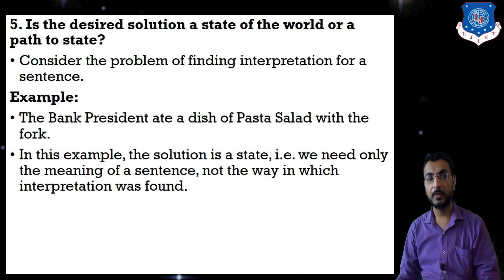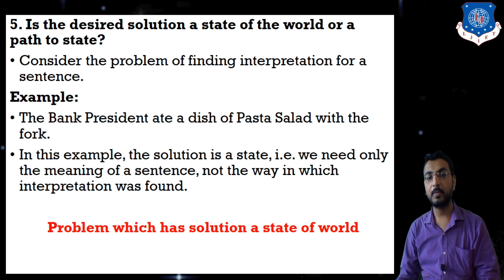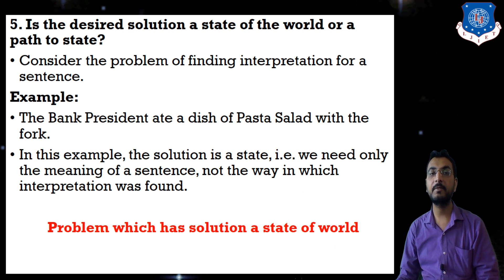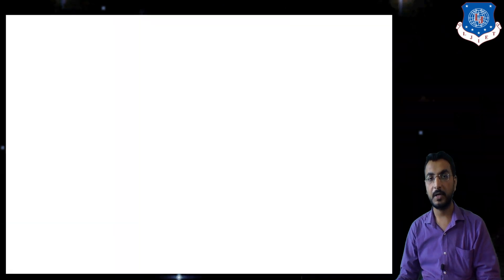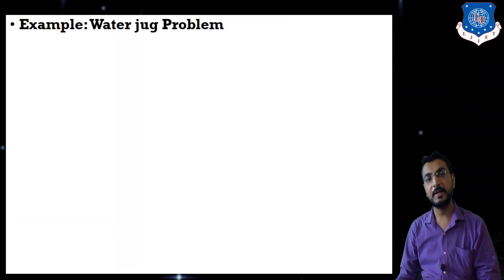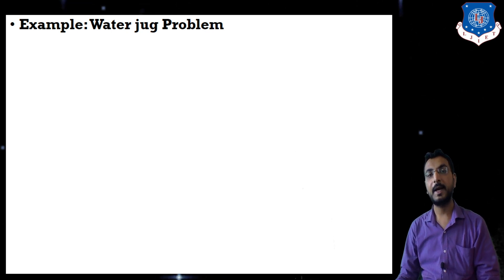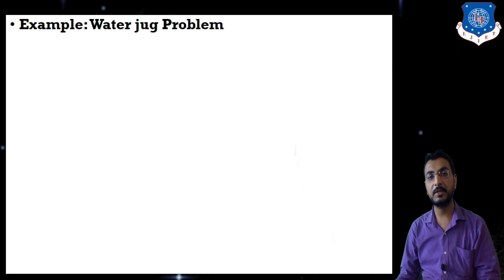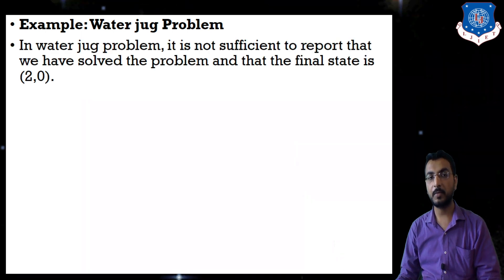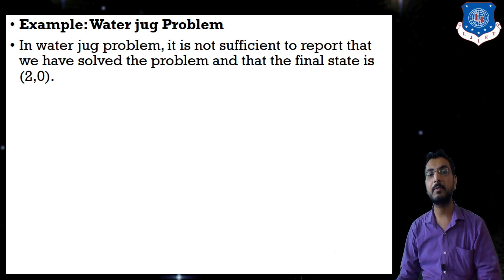So in this case, the problem has a solution as a state of the world — we directly reach the final goal state. Next, consider the water jug problem, in which once we apply some operator we reach only an intermediate state, not the final goal state. In the water jug problem, it is not sufficient to report that we have solved the problem and that the final state is (2, 0).